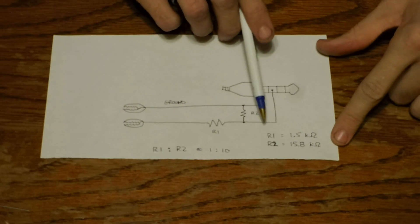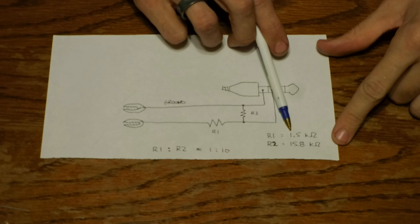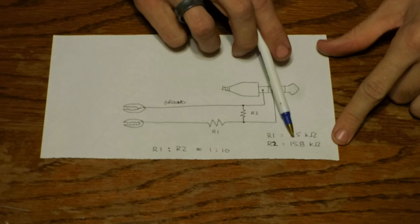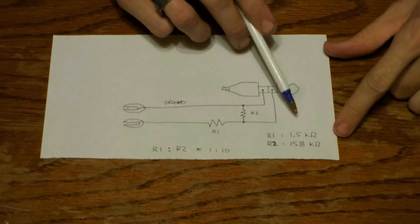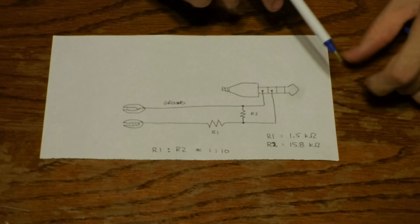Now, the two resistors that I chose, resistor 1 is 1.5 k-ohms, and resistor 2 is 15.8 k-ohms. So, you can see they're roughly a 1 to 10 ratio.